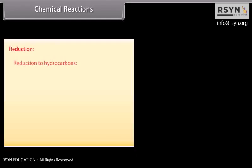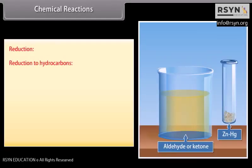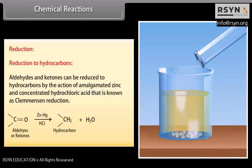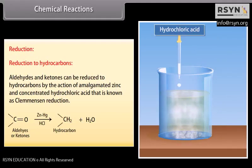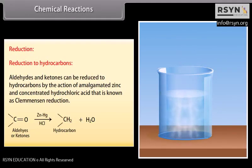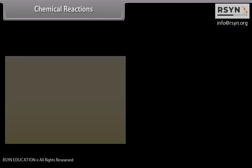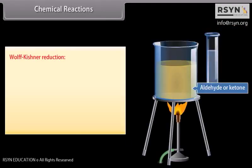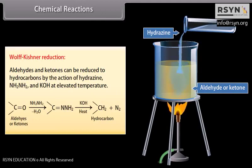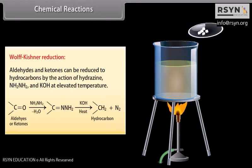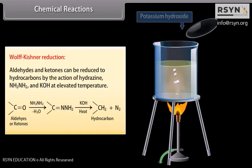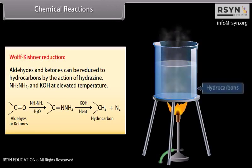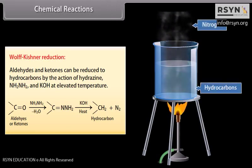Reduction. Reduction to hydrocarbons: aldehydes and ketones can be reduced to hydrocarbons by the action of amalgamated zinc and concentrated hydrochloric acid, which is known as Clemmensen reduction. Wolff-Kishner reduction: aldehydes and ketones can also be reduced to hydrocarbons by the action of hydrazine and potassium hydroxide at elevated temperature.